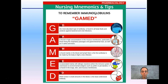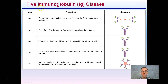A mnemonic device to remember these is 'GAMED' — G-A-M-E-D — referring to the different antibody classes so you don't forget any. There's also a great summary slide reviewing what IgG, IgM, IgD, and so on each do. Finally, the five immunoglobulin classes are shown with their names, properties, and associated structures on the right-hand side — another way to help review and understand the differences between the types of immunoglobulins present in your body.